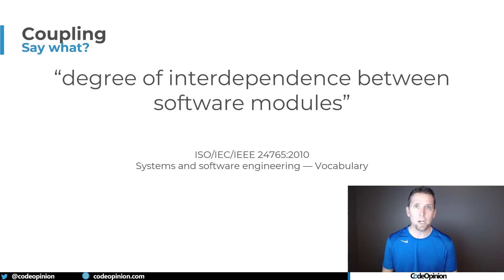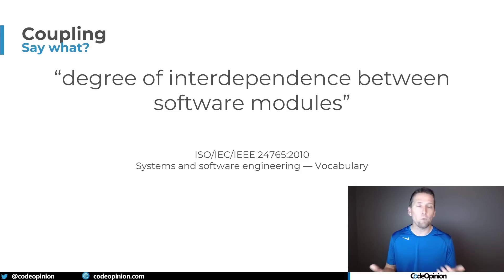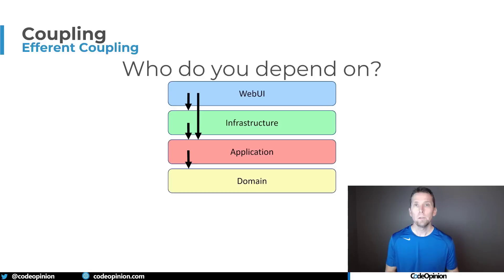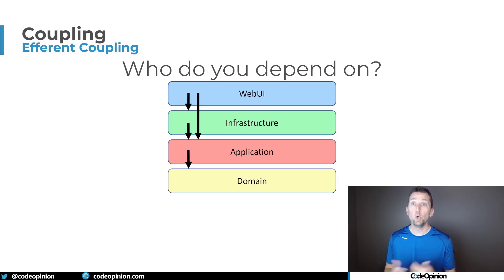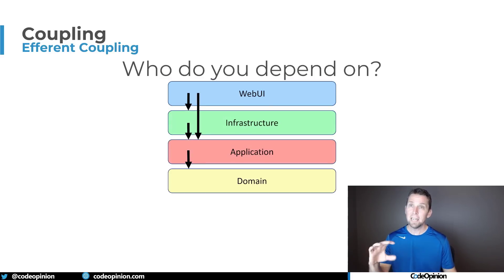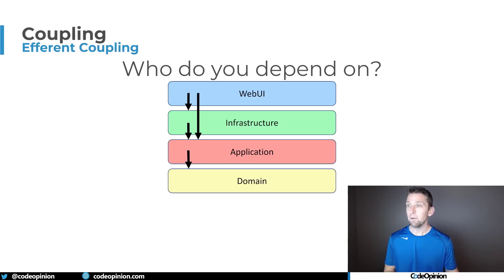We're talking about direction of dependencies because we're trying to manage coupling between technical concerns. Coupling is the degree of independence between software modules, boundaries, functions, et cetera. The first form is efferent coupling — who do you depend on? From the web UI's perspective, we depend on infrastructure and the application. Infrastructure depends on the application. The application depends on the domain. And the domain depends on nobody.